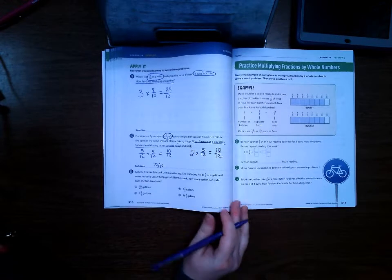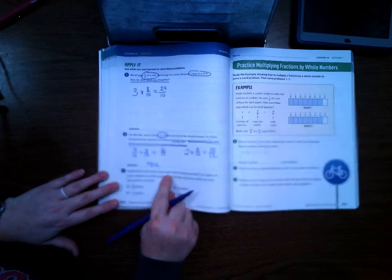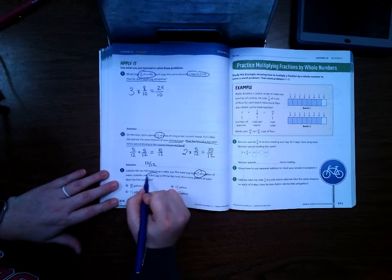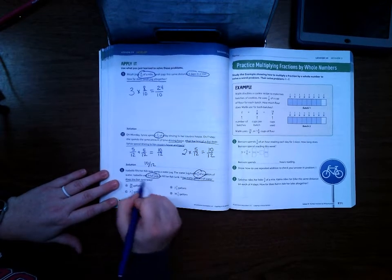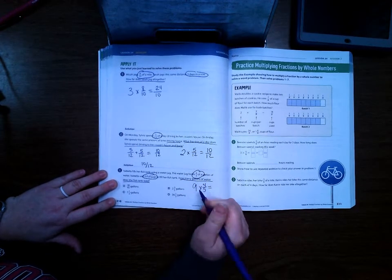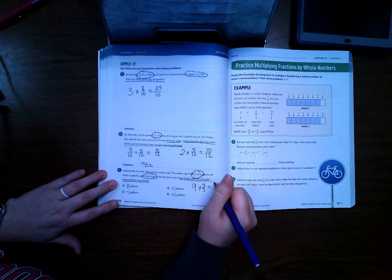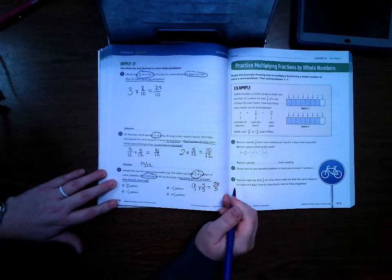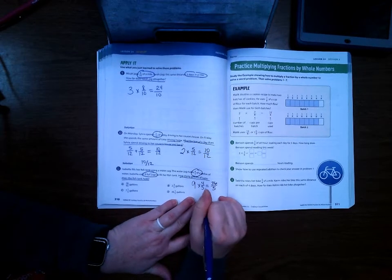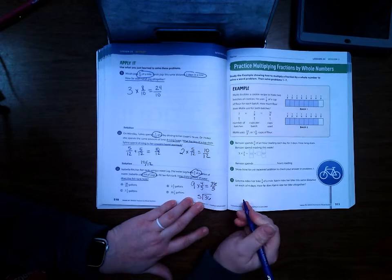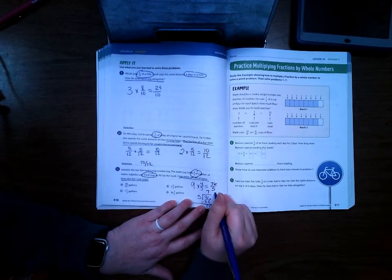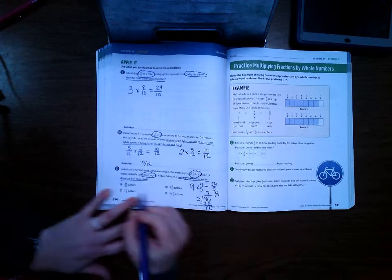Number eleven. Isabella fills her fish tank using a water jug. The water jug holds four-fifths of a gallon of water. Isabella uses nine full jugs to fill the fish tank. How many gallons of water does the fish tank hold? So nine times four-fifths. Nine times four is thirty-six, and we put the five down here. Now, the thing is, all of our answers have a whole number. This is an improper fraction, and we need a mixed number. So I'm going to take thirty-six and divide it by five. I know that five times seven is thirty-five, and I have one left, so that one becomes my fraction. So my answer is seven and one-fifths.